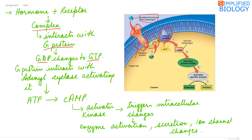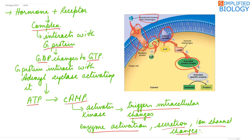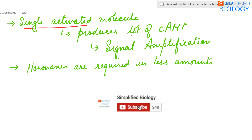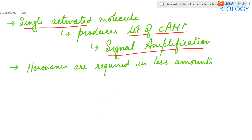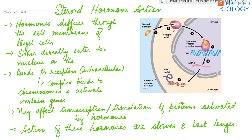The GTP-containing G-protein then interacts with adenyl cyclase, activating it. As a result, ATP gets converted into cyclic AMP. The cyclic AMP then activates kinase proteins, which trigger intracellular changes causing enzyme activation, secretion, and ion channel changes. A single activation produces a large amount of cyclic AMP. This is known as signal amplification, which means hormones are required in very small amounts.